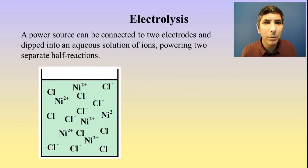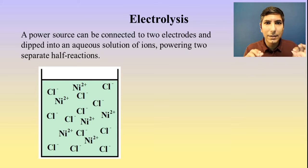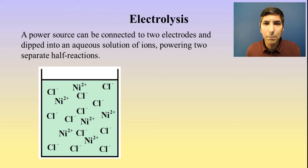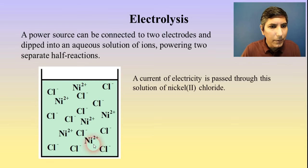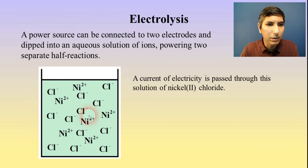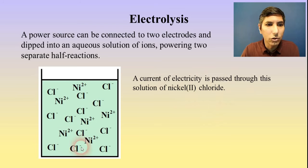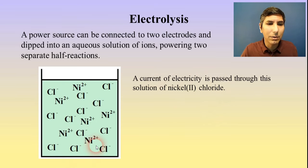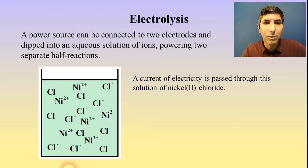Electrolysis is a process by which you can take a solution that contains ions and connect a power source with two electrodes, dip these electrodes into aqueous solutions of those ions, and it'll power some half reactions. Usually, if we have a solution like nickel chloride and we pass a current of electricity through that solution, our goal is to plate out some of that nickel onto an electrode for commercial purposes, perhaps for nickel plating or some other sort of application.